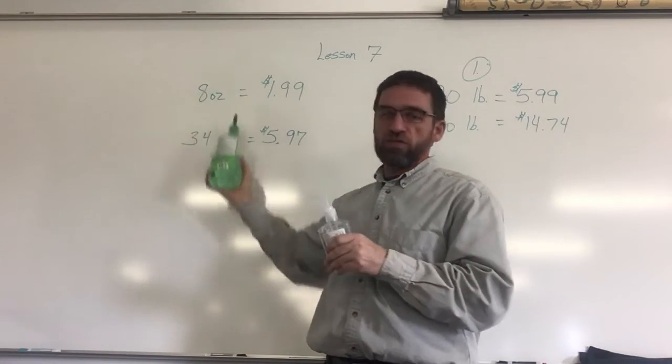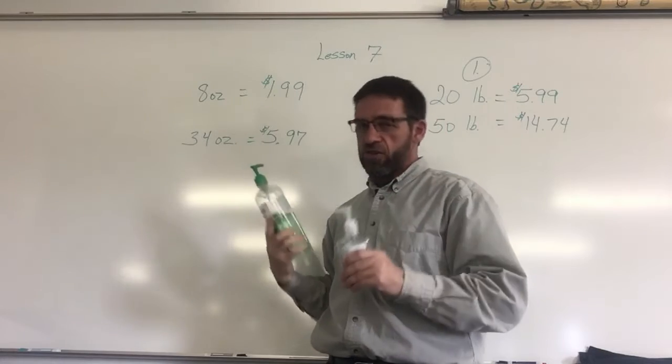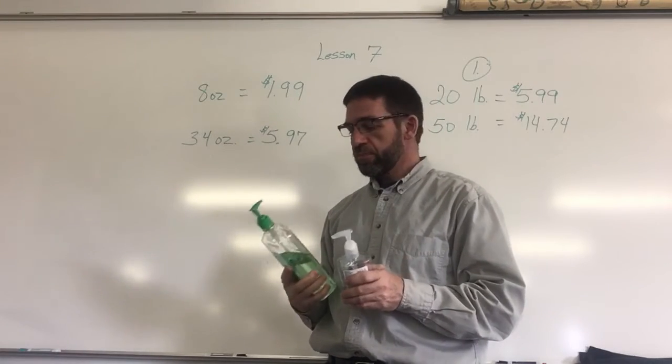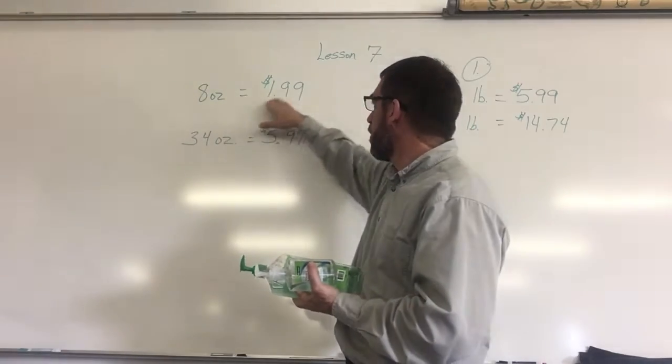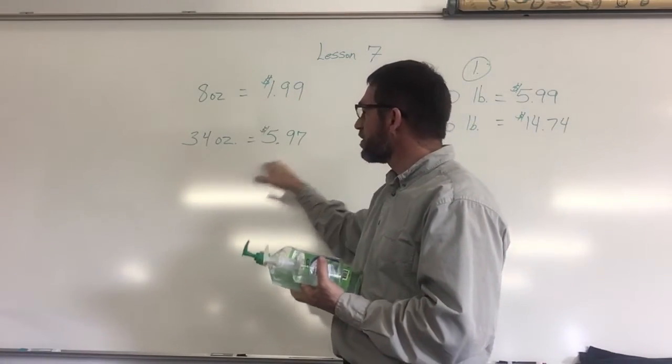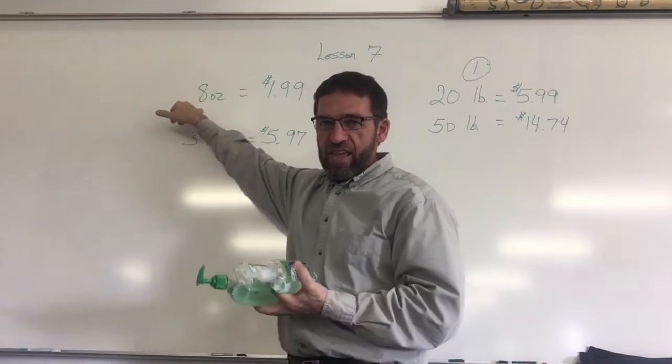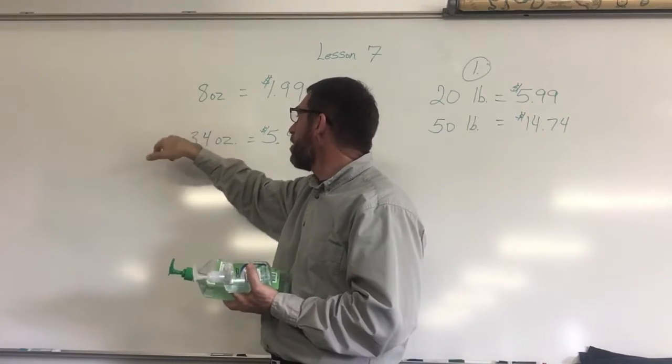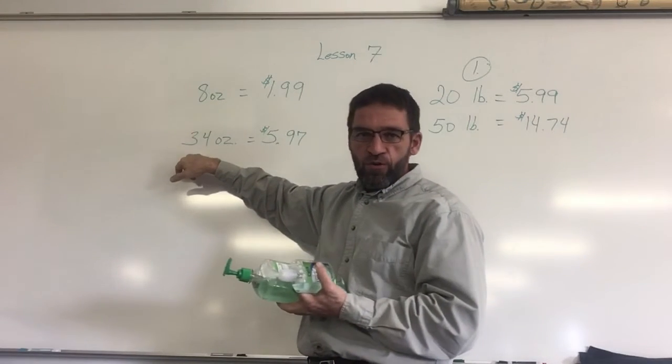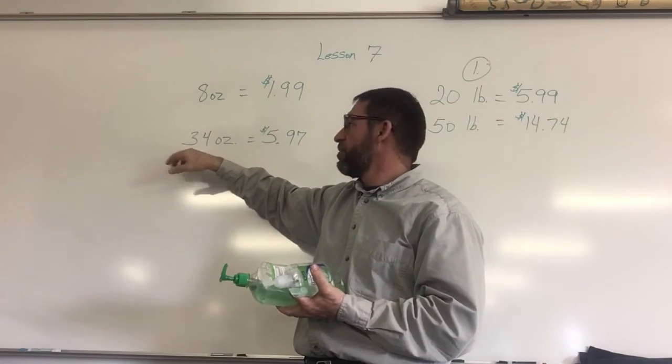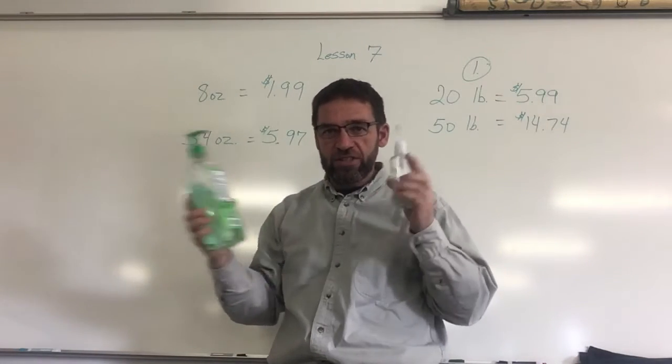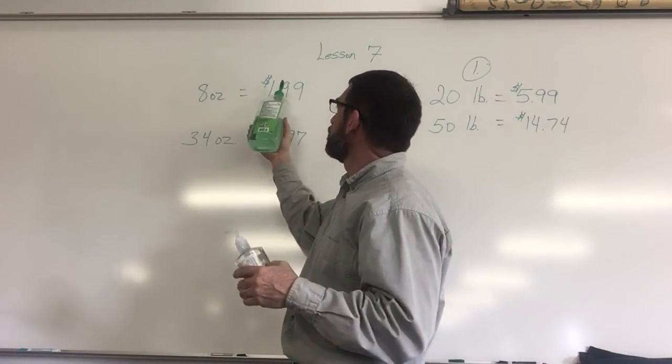That's one way of figuring it using the ounces. There's another way that would even be quicker. You can round - I rounded this to $2 and this to $6. You can look at the 8 and ask yourself how many 8s will go into 34.